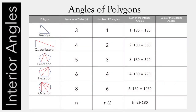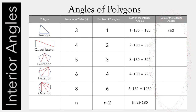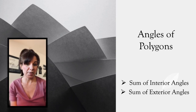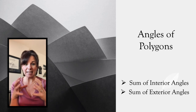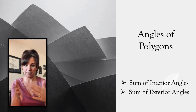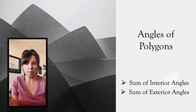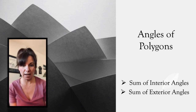So we can generalize this as well: the sum of the exterior angles for any polygon is 360 degrees. The cool thing about math is that we can find these patterns — like for the interior angles of a polygon we can just separate it into triangles, and for the exterior angles of a polygon they always add up to 360. We're going to use this information to build upon and learn more about quadrilaterals in the upcoming lessons. Thanks for being here.